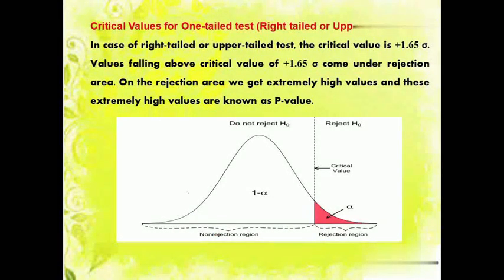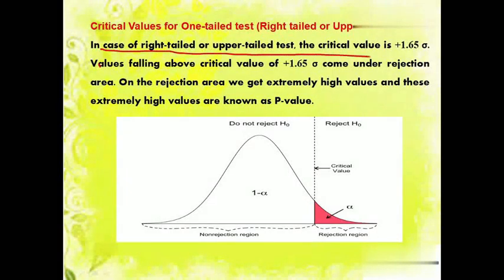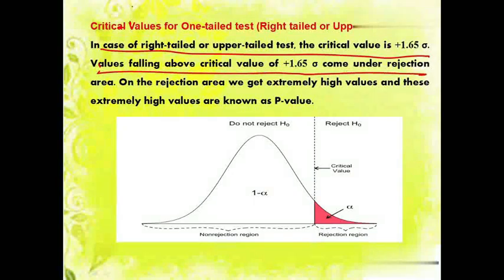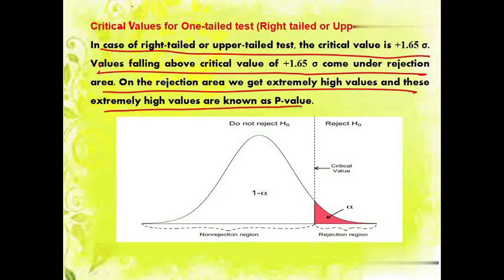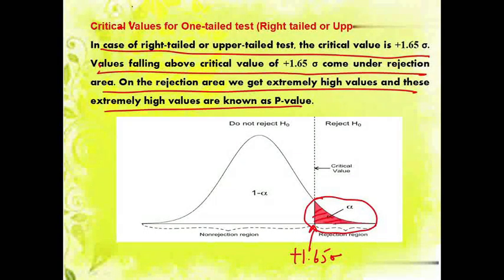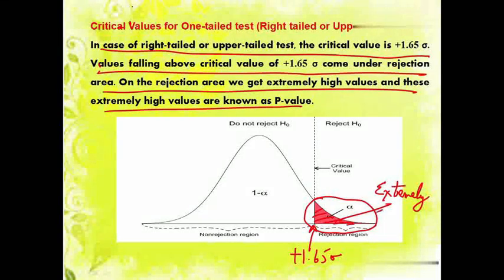Now we will talk about critical values for a one-tail test — right tail or upper tail test. In case of a right tail or upper tail test, the critical value is plus 1.65 sigma. Values falling above the critical value of plus 1.65 sigma come under the rejection area. From the rejection area we get extremely high values, and these extremely high values are known as p-values. This is the critical value of plus 1.65 sigma, and the extremely high values coming in the rejection area are known as p-values.